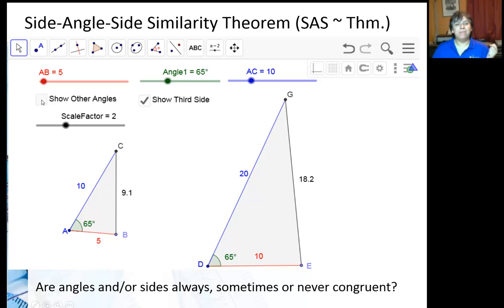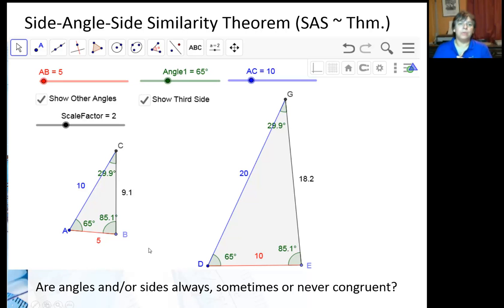But let's go ahead and really confirm that. I'm going to show all the angles. You can see that all of the angles are congruent, so it's definitely similar. When all three angles in a triangle are congruent, the triangles have to be similar.